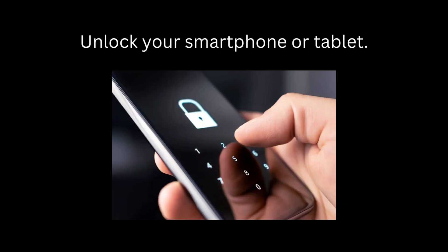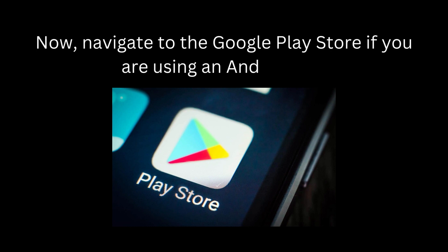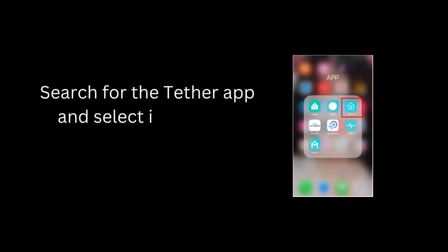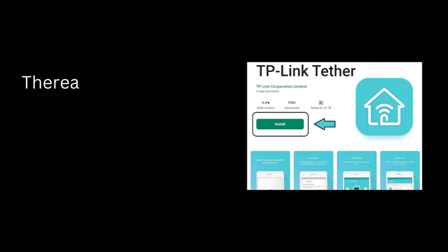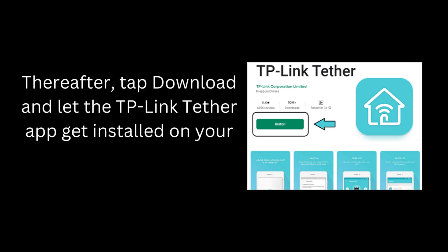Unlock your smartphone or tablet. Navigate to the Google Play Store if you are using an Android OS. Search for the Tether app and select it from the displayed list. Tap Download and let the TP-Link Tether app get installed on your mobile device.